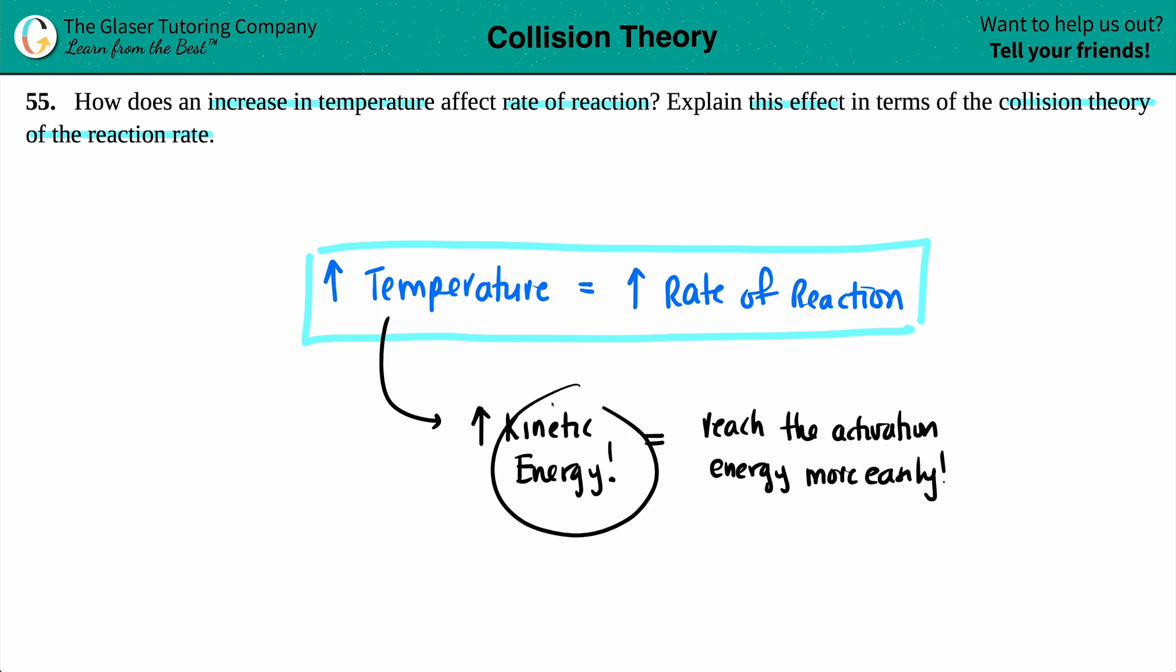If you're able to reach the activation energy more easily, you are able to produce something called transition states. Transition states is the same thing as an activated complex.